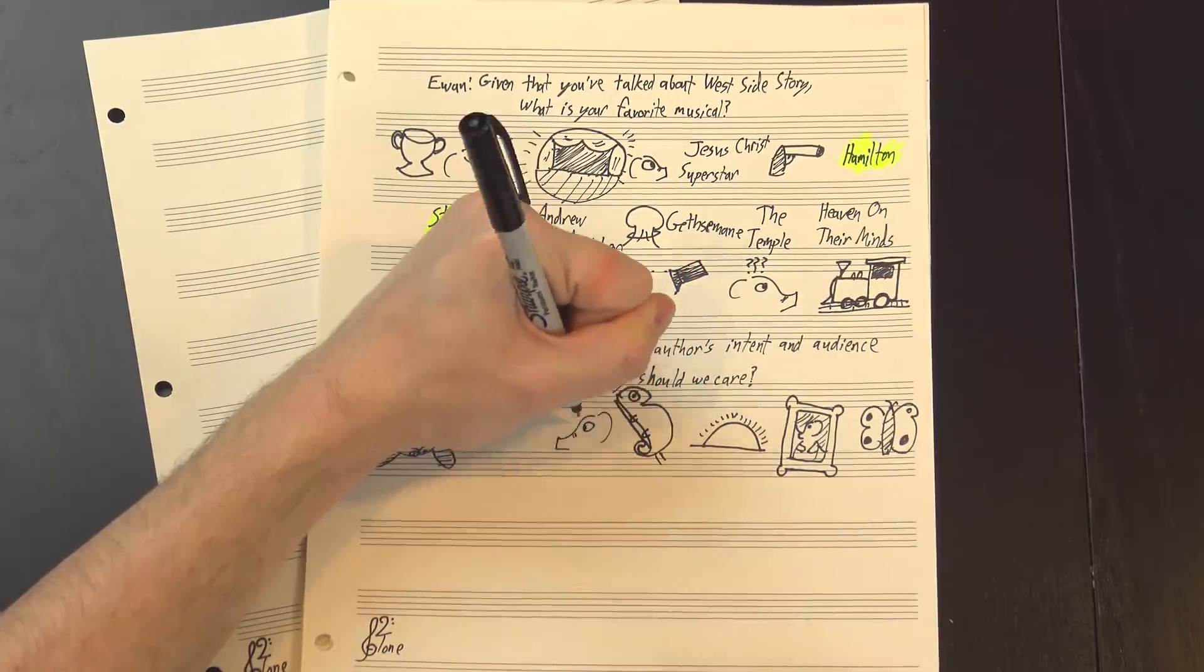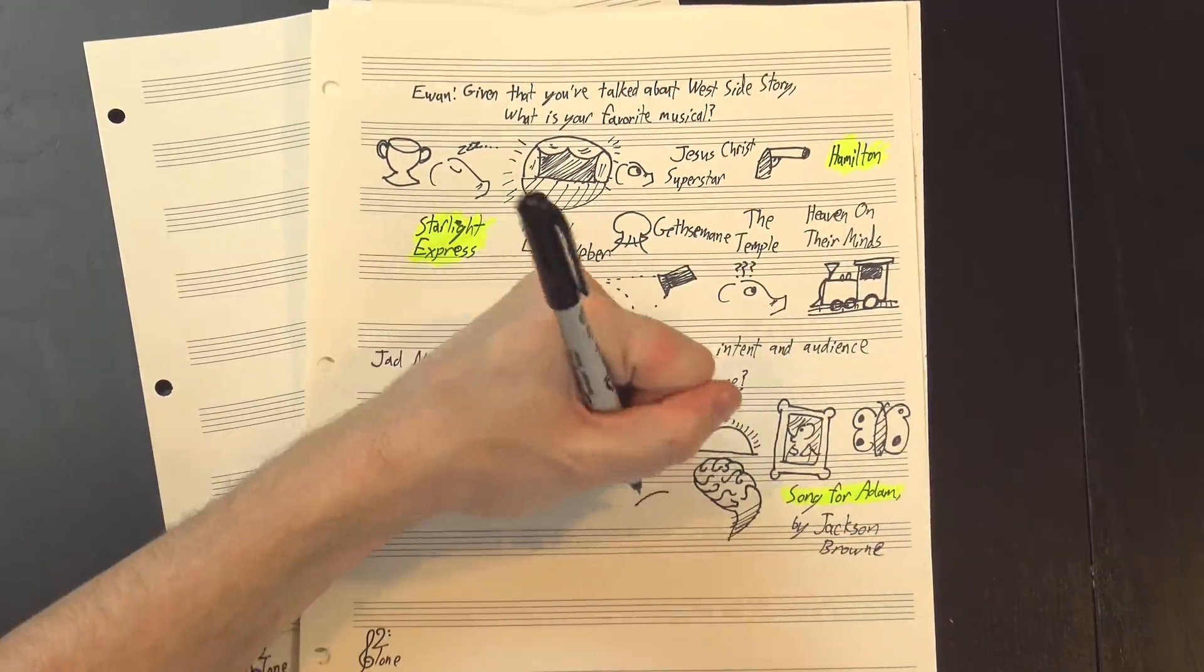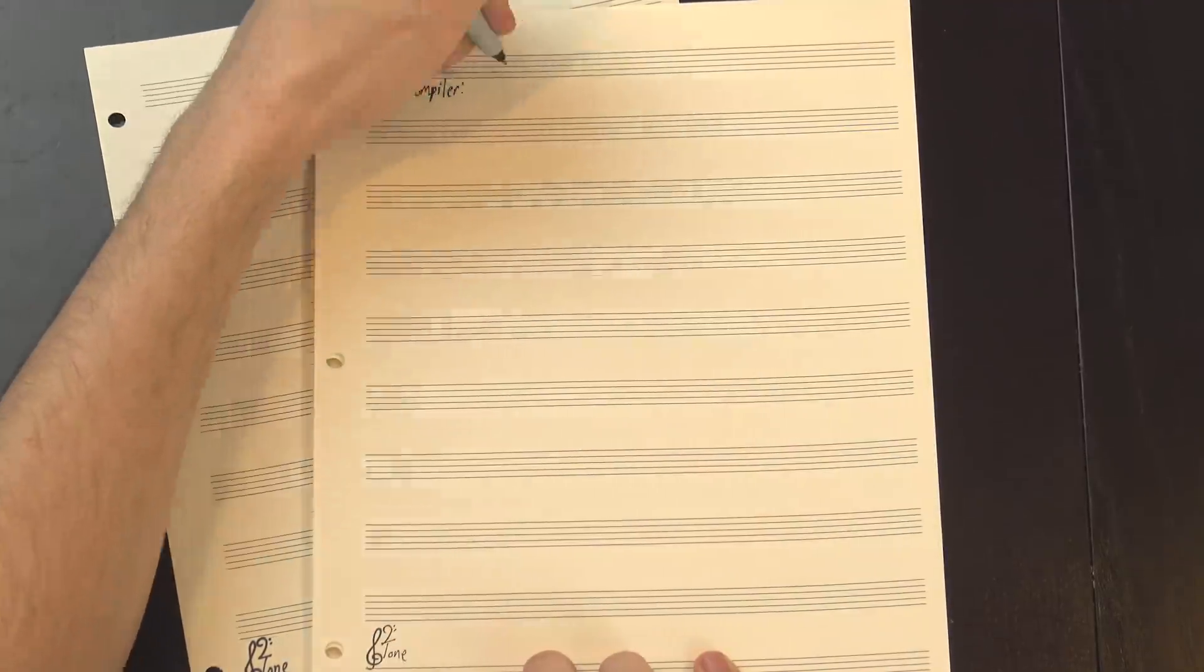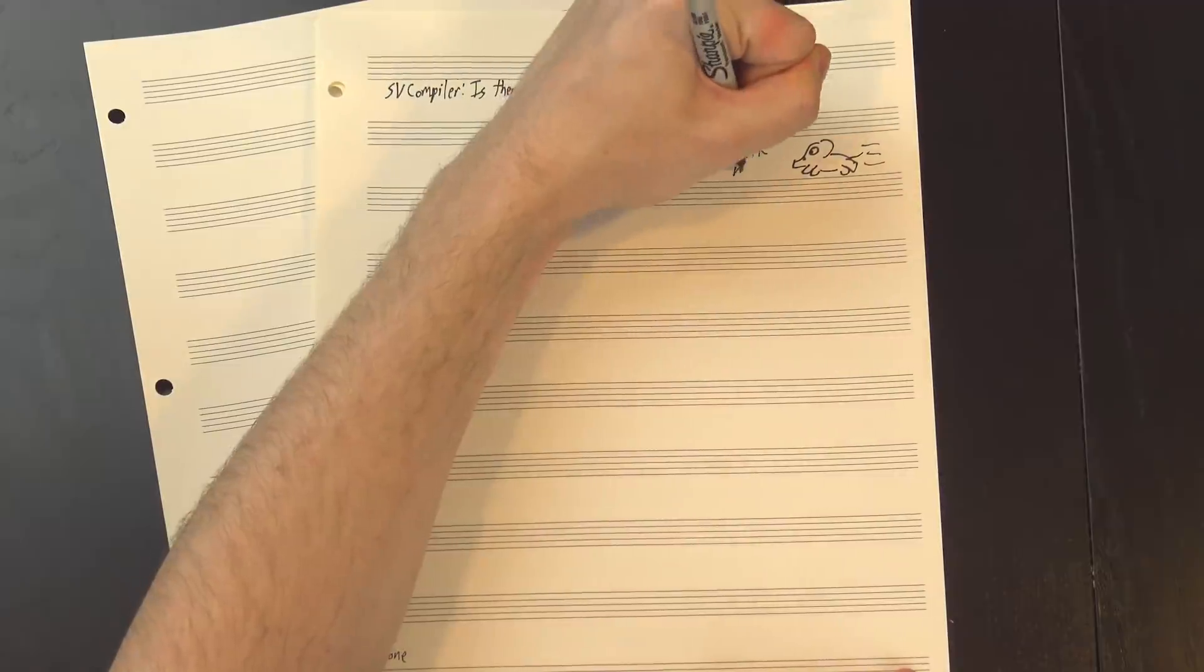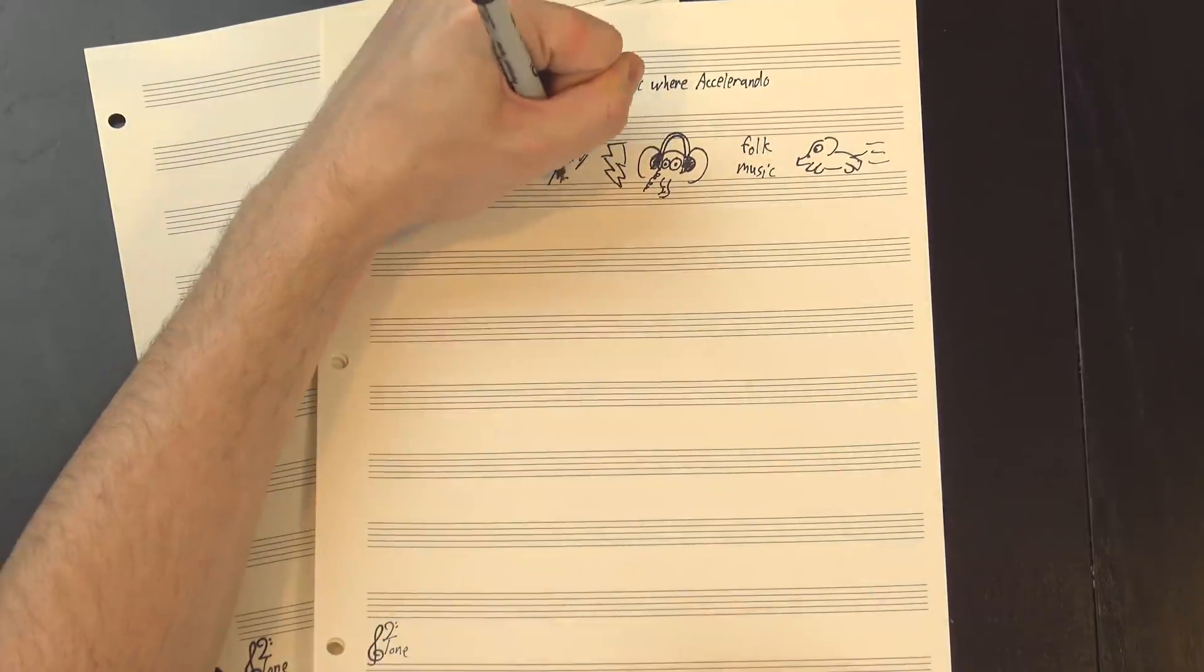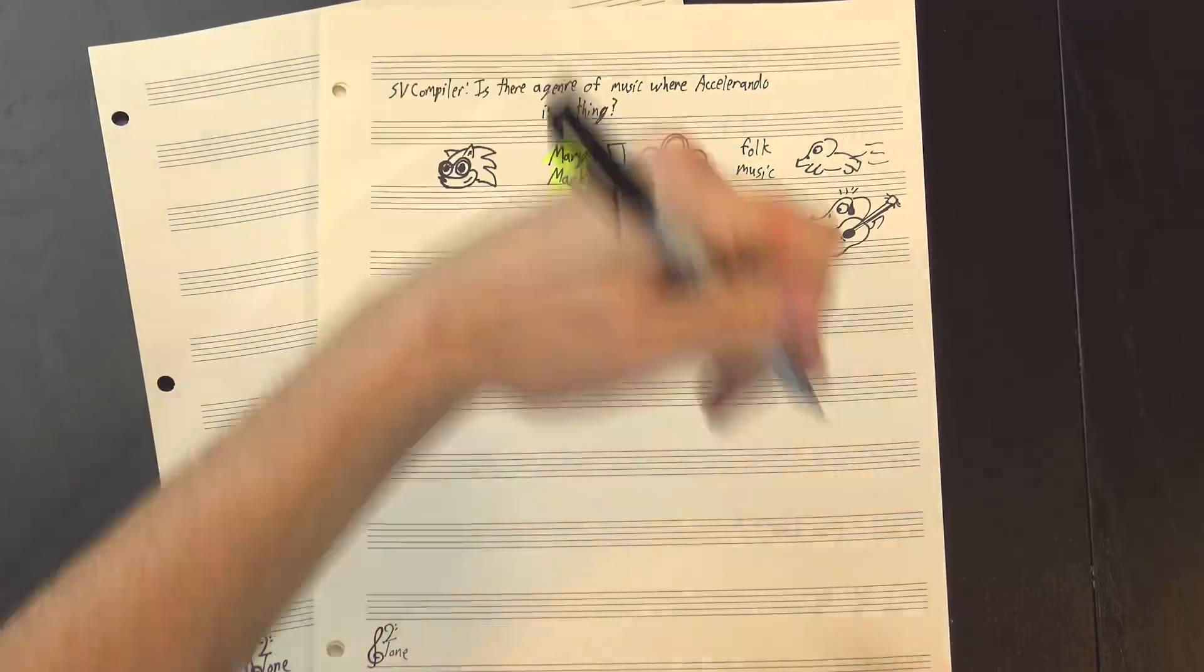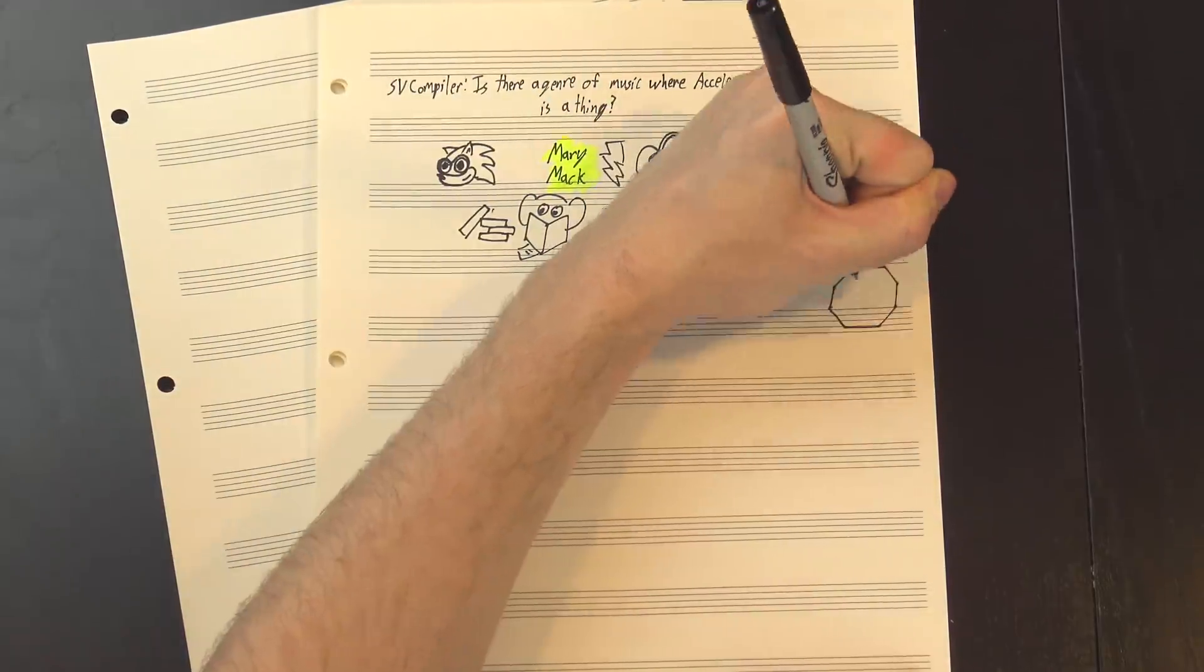In a polymeter, everyone agrees how long a beat is, which means the length of the bar has to change. For instance, here's a 4-4 drum beat with a 3-4 guitar riff on top. A polyrhythm, on the other hand, means that everyone agrees how long a bar is, which means that some people need to play shorter beats in order to fit everything in, like this pattern where the lower drum plays 3 hits in the time it takes the higher one to play 4. Next! Ewan asked, given that you've talked about West Side Story, what is your favorite musical? Would it be too cliché to say Hamilton? Because it's Hamilton.